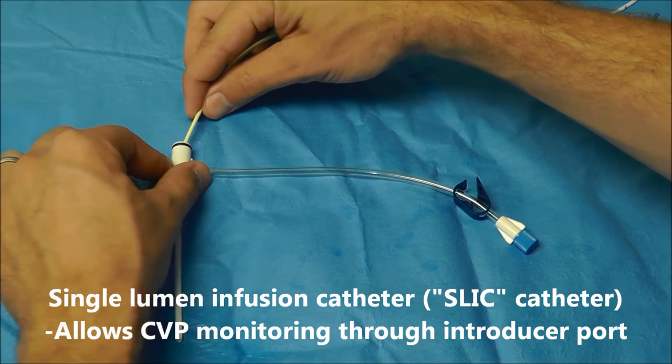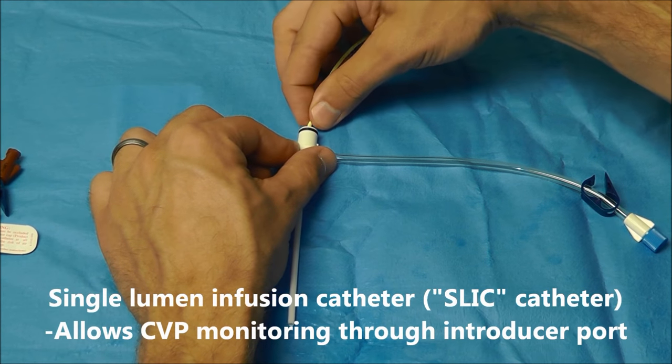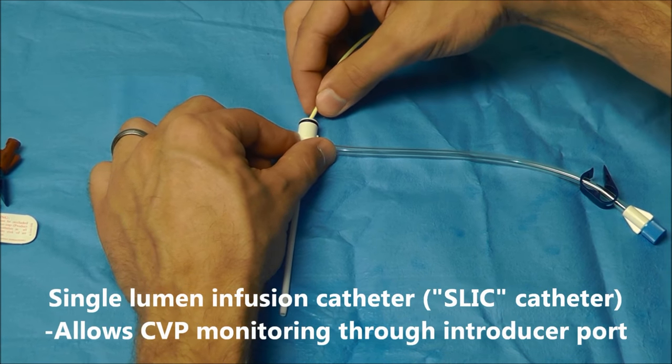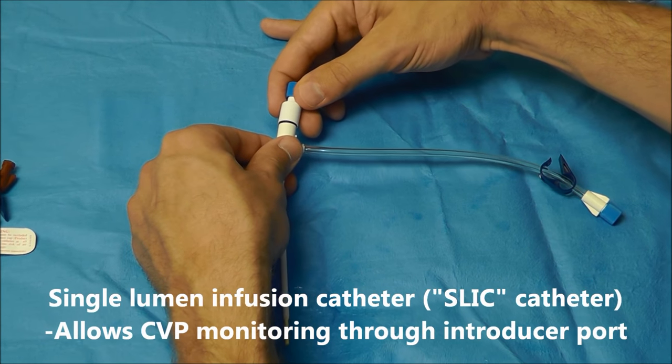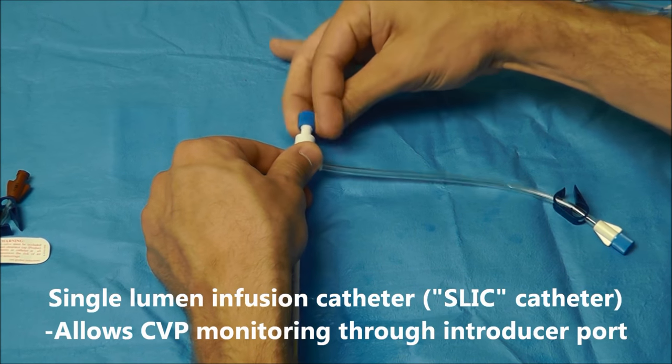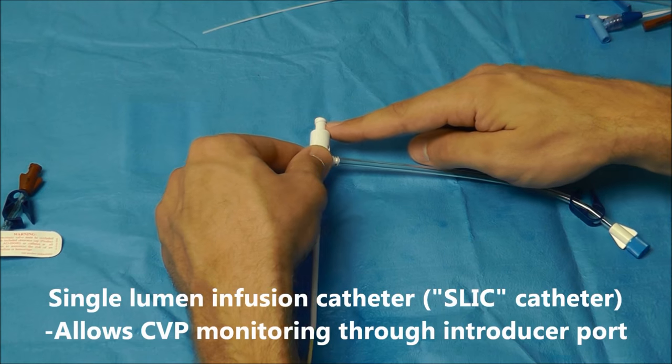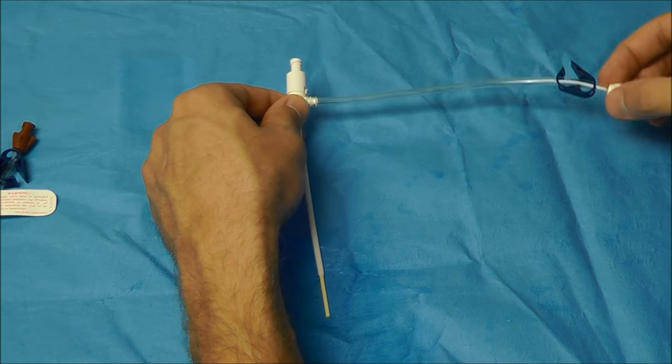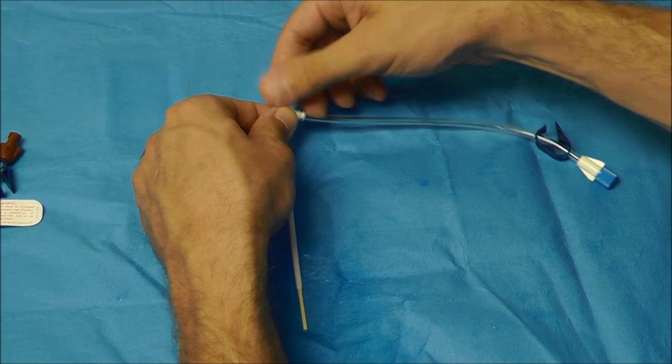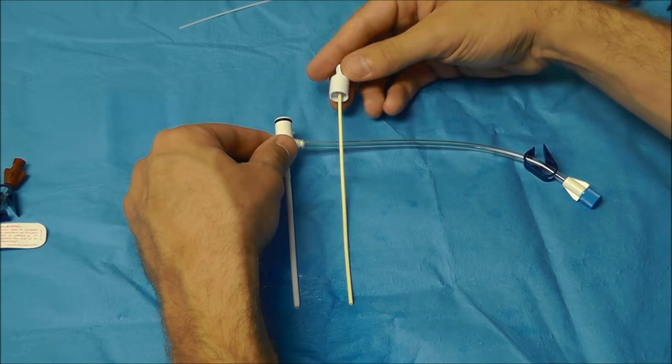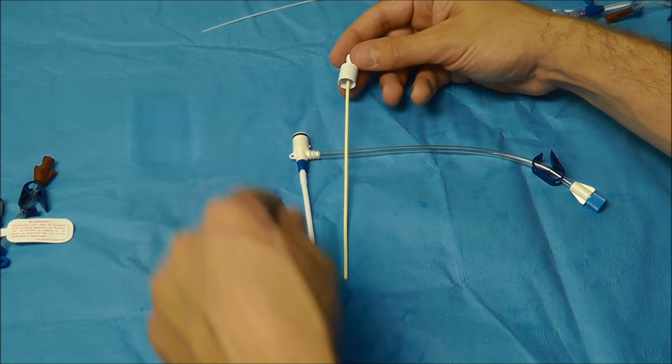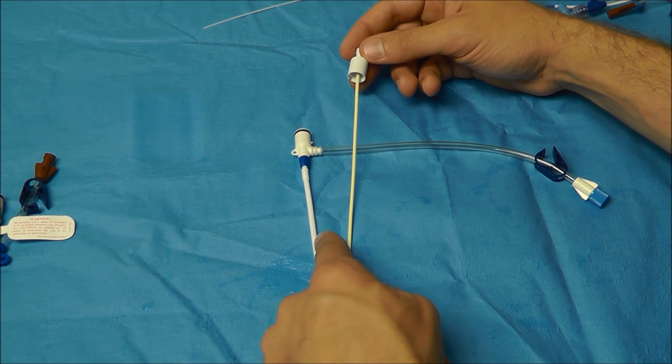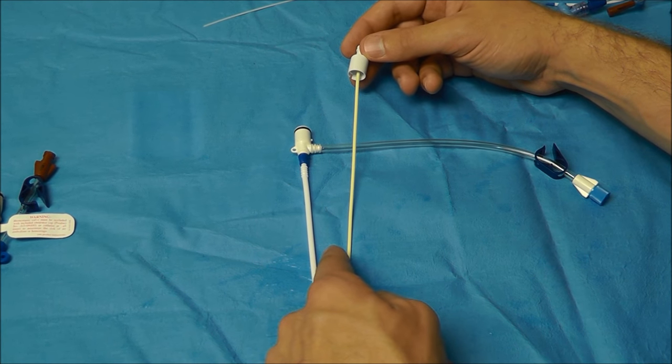What you do is you just insert this down the hub here of the introducer port, and once you get this on and connect it here, now this is going to allow you to hook up transducer tubing and monitor CVP on a single lumen cordis. So the only use of a slick catheter is if you want to monitor CVP on a central catheter that has an introducer port.